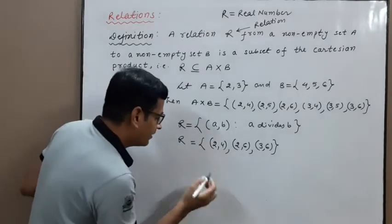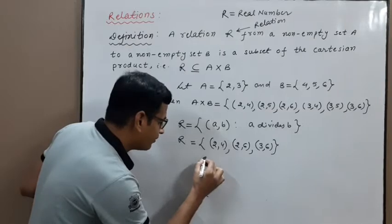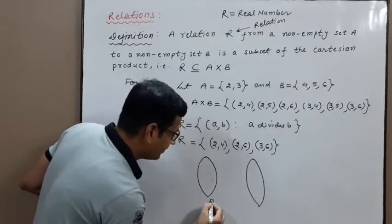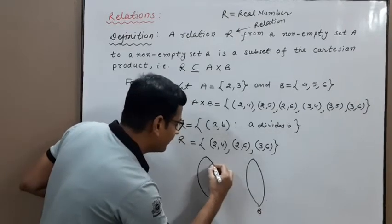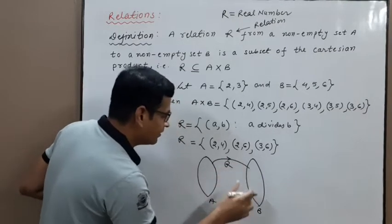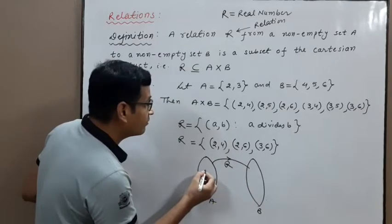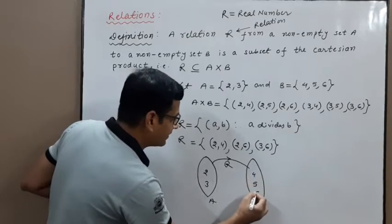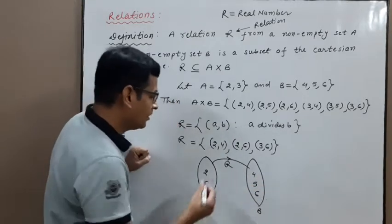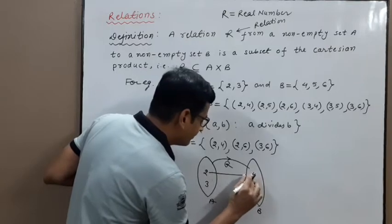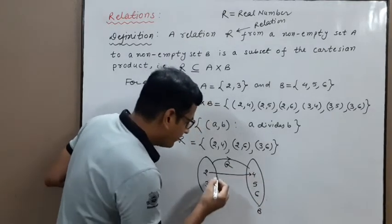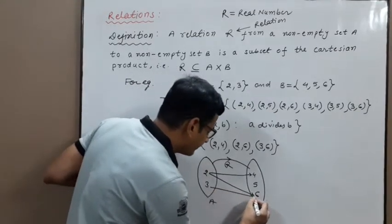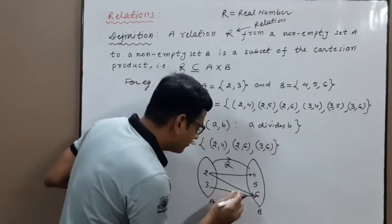R is a relation from set A to set B. In set A there are 2 elements: 2 and 3. In set B there are 3 elements: 4, 5, and 6. Since 2 divides 4, 2 divides 6, and 3 divides 6, we can use an arrow diagram to represent these relationships.